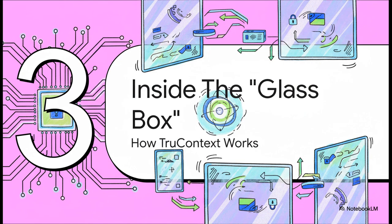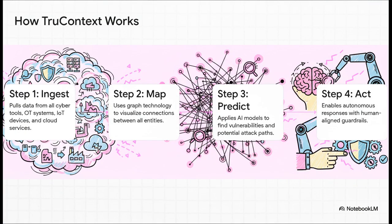Okay, so the whole glass box idea sounds fantastic, right? But how does it actually pull it off? What's happening under the hood that lets it connect all those dots and solve that context gap? Well, it boils down to this really powerful four-step process.